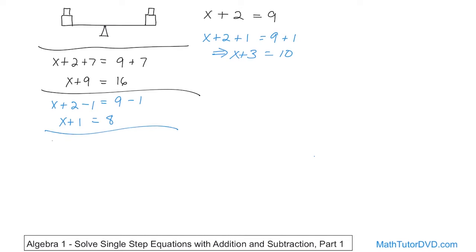Now, from x plus 2 equals 9, let me subtract 2 from both sides. On the left, 2 minus 2 gives 0, so I'm left with just x. On the right, 9 minus 2 gives 7. So I get x equals 7. This is interesting because all the previous transformations gave us equation-looking results, but this one tells us the unknown value x is actually equal to 7 — we've solved the equation.